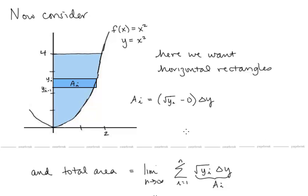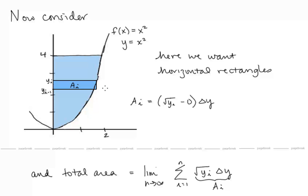Now let's consider areas where we might want to use horizontal rectangles. For example, if we want the area between the curve f of x equals x squared and the y-axis as y goes from 0 to 4, it would be simplest to take horizontal rectangles, and so we're going to be integrating with respect to y.